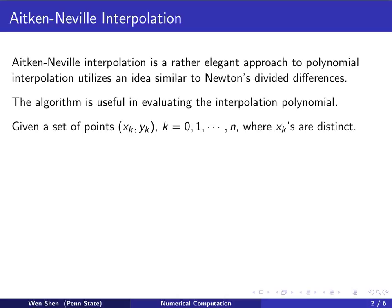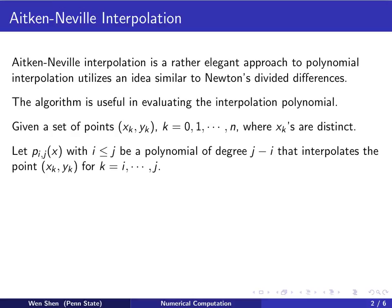So we start with a given set of data points (xk, yk), k from 0, 1 to n, with n plus 1 points, under the assumption that all the xk's are distinct. And now, let Pij of x, where the index i is less than j, be a polynomial of degree j minus i. And that polynomial should interpolate the data points (xk, yk) for all the k's that lie between i and j.